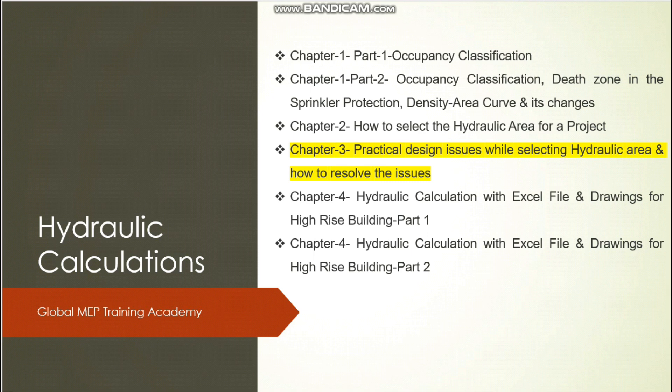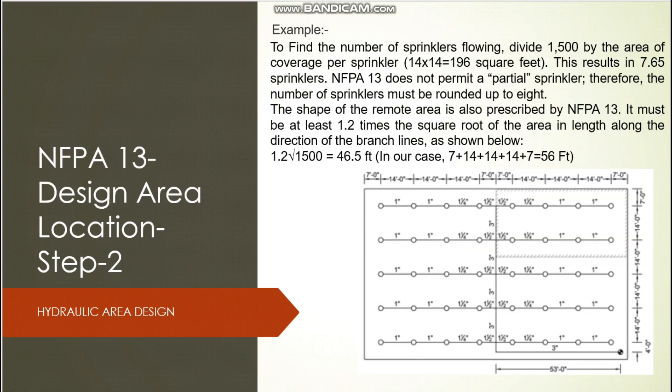In this video, Chapter 3, I will answer practical questions I asked in the Chapter 1 video — for example, whether to consider a toilet room if it falls within the hydraulic area. You will get a very clear understanding of how to handle problems in your project. In Chapter 4 Part 1 and Part 2, we will do full calculations using an Excel file, and I will share isometric and actual drawings so you can verify every point.